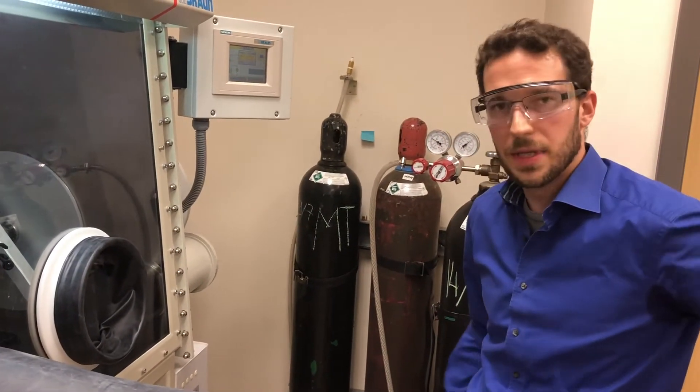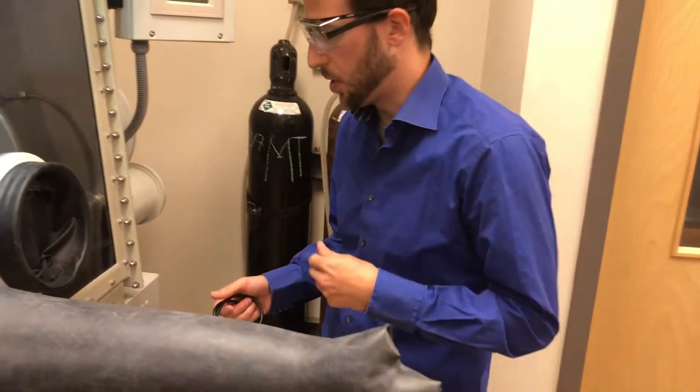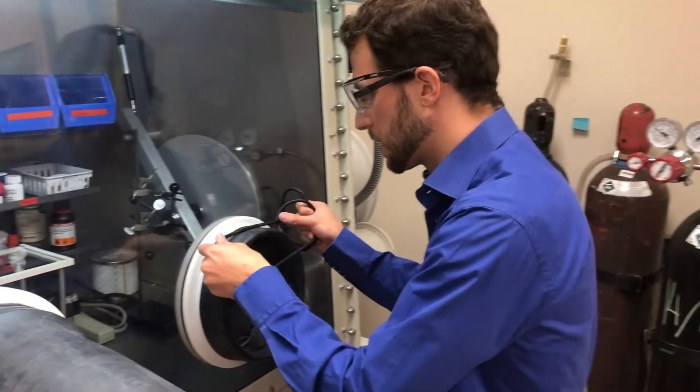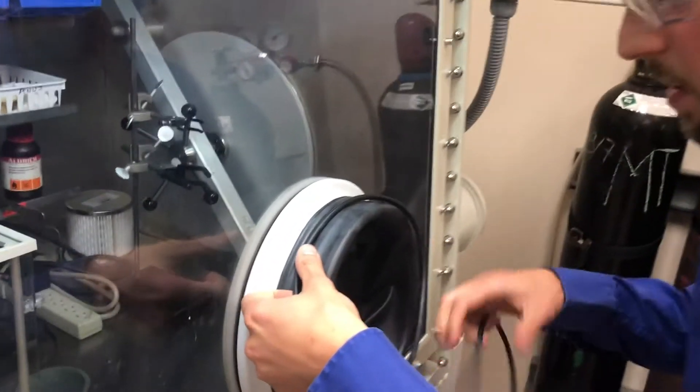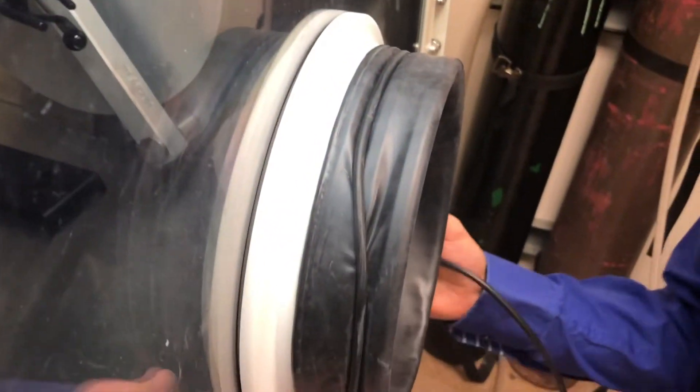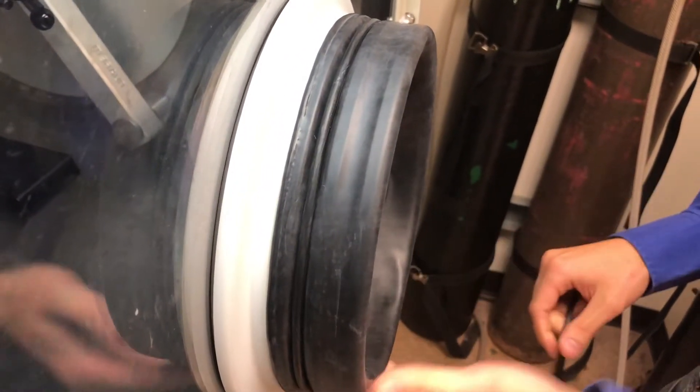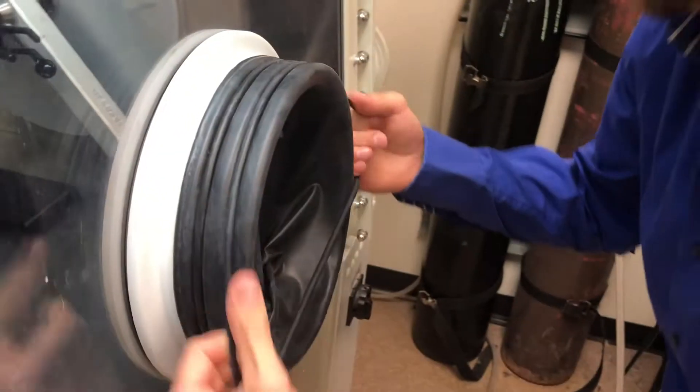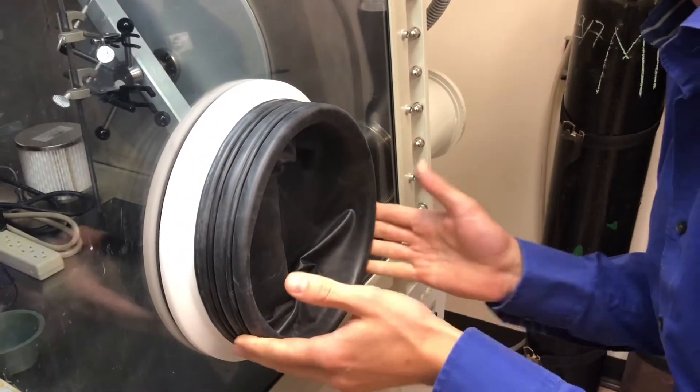So finally you take the two rubber o-rings. These are new ones and put them in the two other creases. Like so.